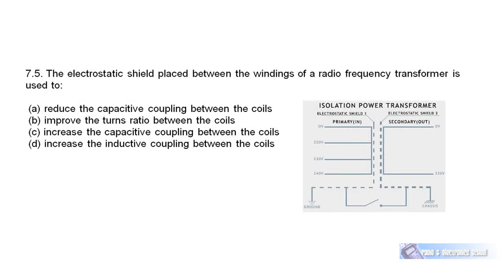Question 7.5: The electrostatic shield placed between the windings of a radio-frequency transformer is used to reduce capacitive coupling between the primary and secondary windings. There is unwanted capacitance between the primary and secondary, and a copper or brass shield embedded between the coils — connected to ground and chassis — destroys that electric field. The purpose is to reduce capacitive coupling between the coils.